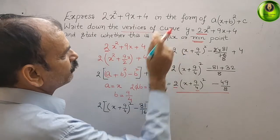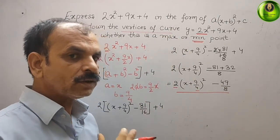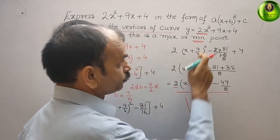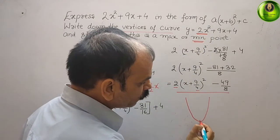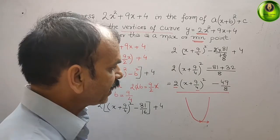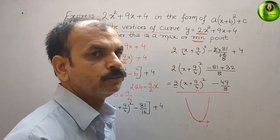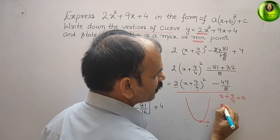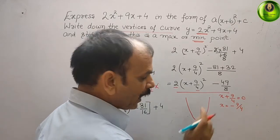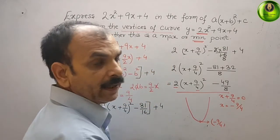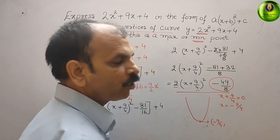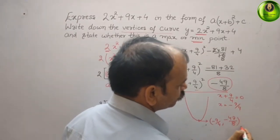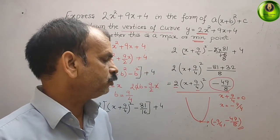Now we write down the vertices of the curve — that is, the turning point or minimum point. To find it, set x + 9/4 = 0, which gives x = −9/4. The x-coordinate of the vertex is −9/4, and the y-coordinate is −49/8. So the vertex is (−9/4, −49/8).